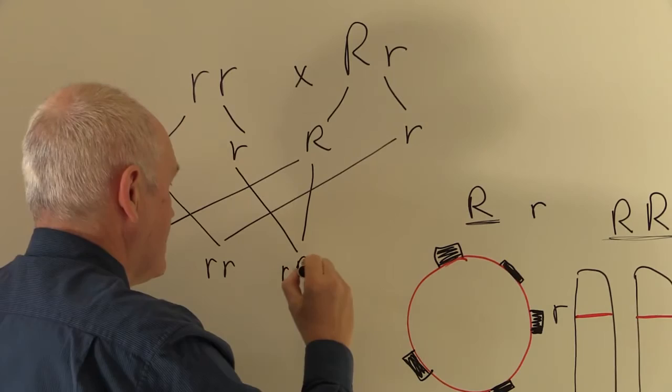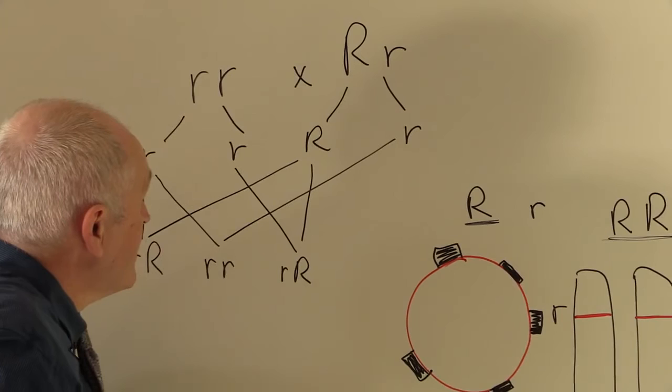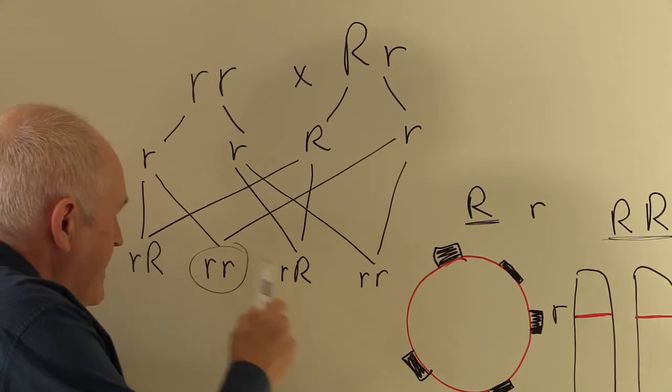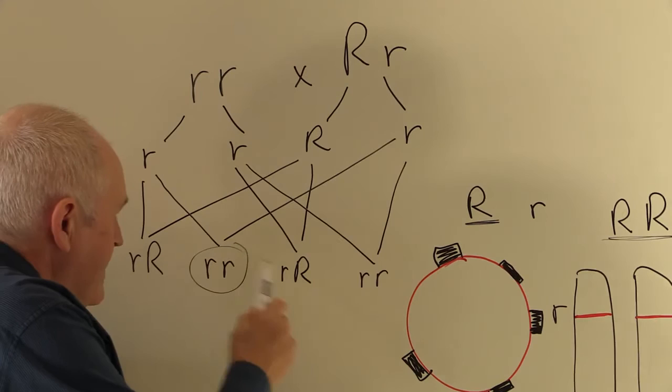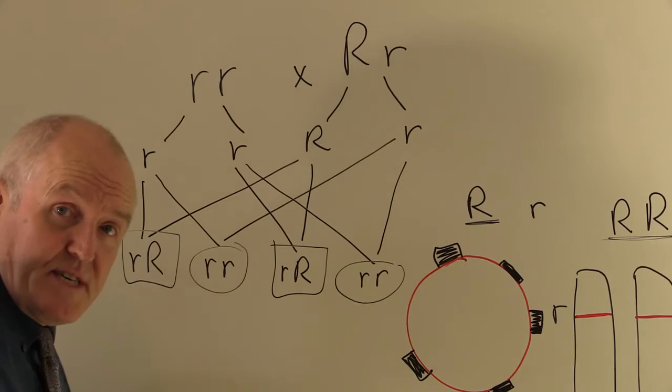Alternatively, it could be that one with that one, resulting in a Rhesus positive fetus, because there is one copy of the Rhesus gene present, which of course is dominant, or it could be that one combining with that one, which will give us two small r's. So here we see the probability is 50-50 that any particular fetus will be Rhesus positive. The presence or absence of the Rhesus factor is entirely genetic.